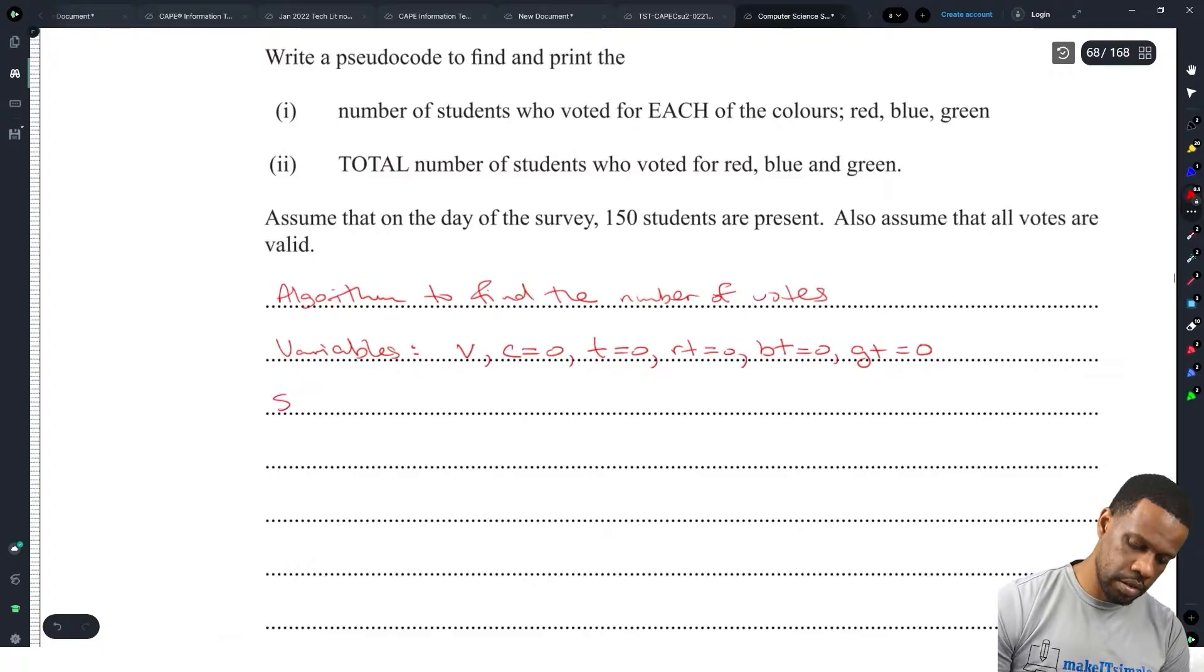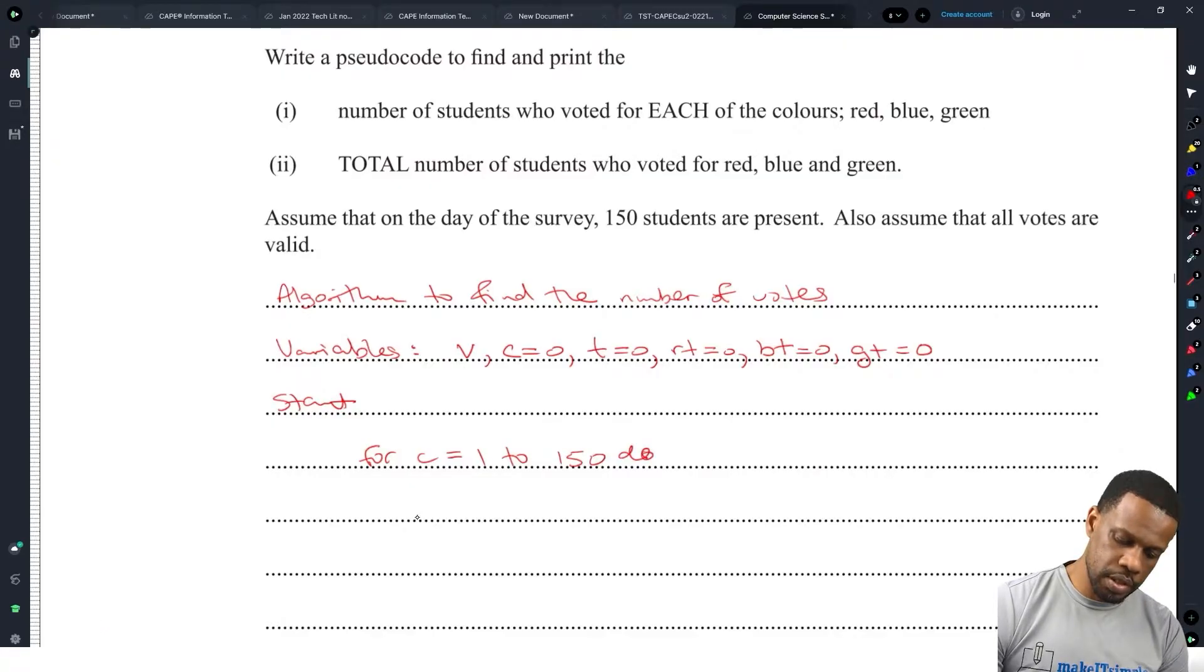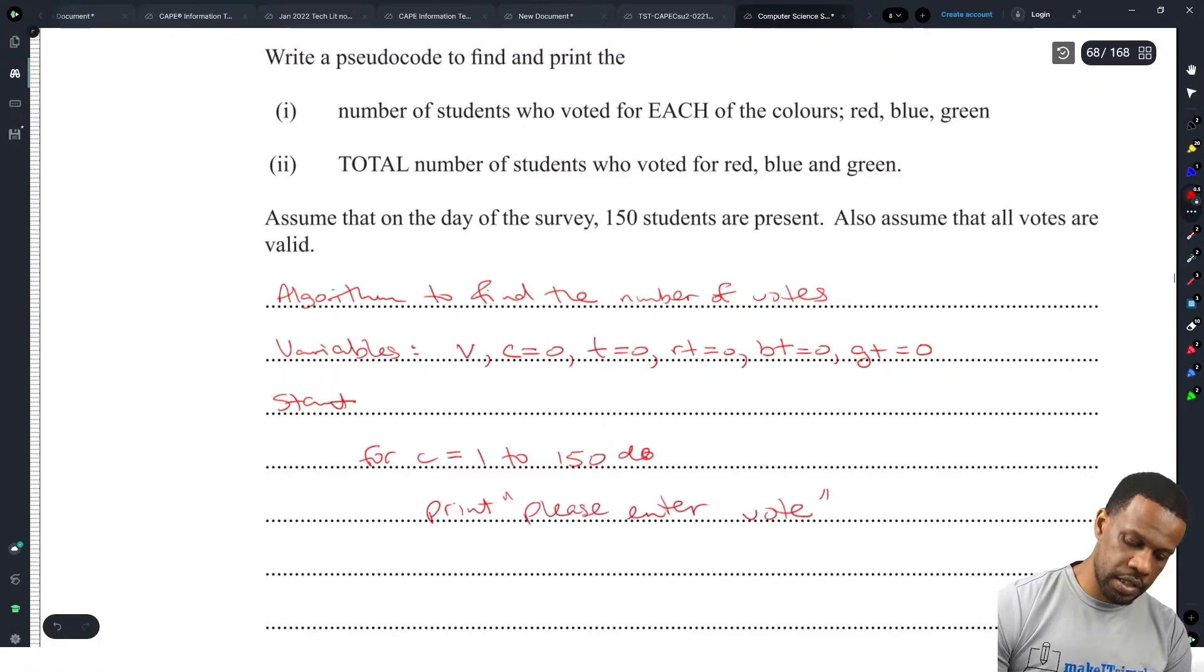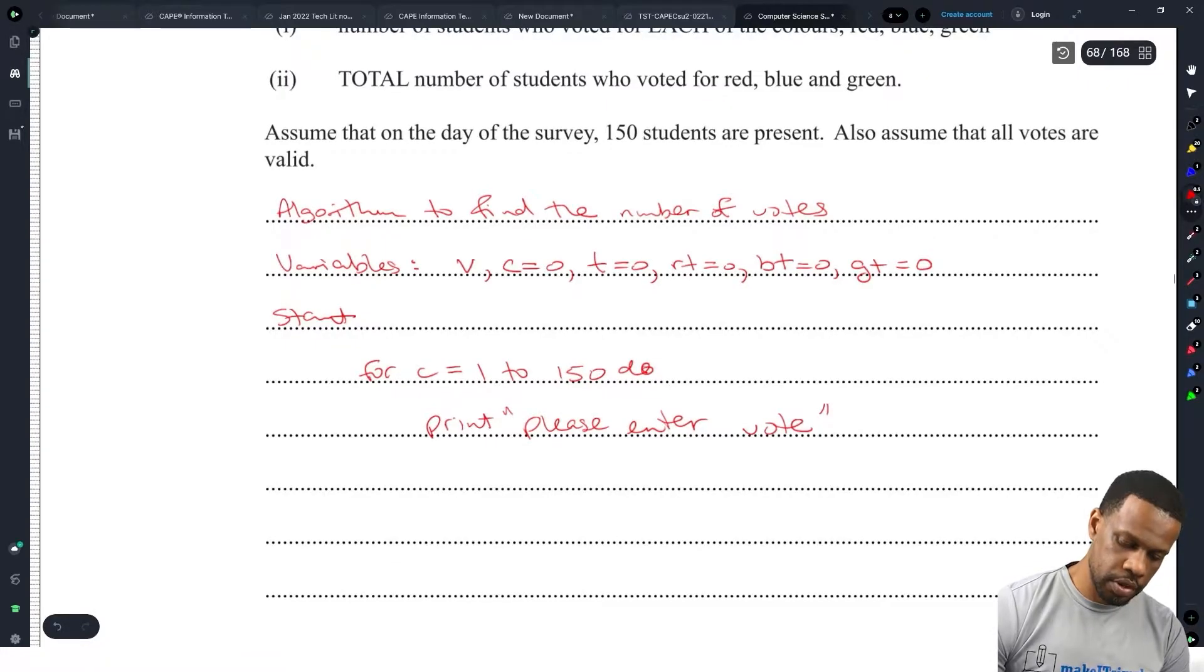So we start. Assume that all votes are valid. Alright, so we do not follow. Loop for 150 times. For C is equal to 1 to 150 do. And then we're going to say print please enter vote. After they enter the vote, we read the vote. Read V, right?